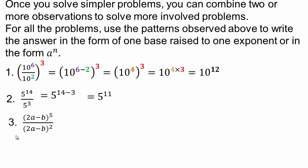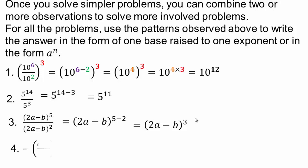Now we're going to extend it not just to numbers, but to something that is not numbers — and remember, it's the same principle. You have 5 of these on top and 2 of these on the bottom. We can make equivalent fractions by dividing this out, so 5 of these when you divide 2 of them out, you end up with 3 left over on the numerator.